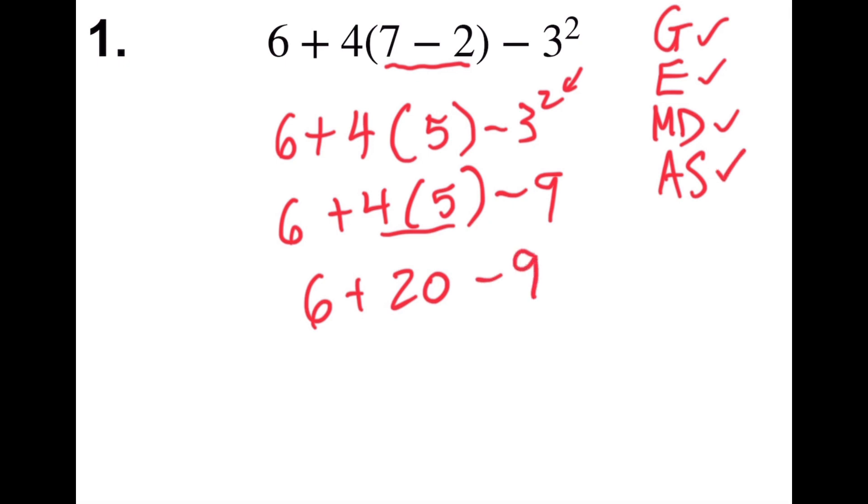And then last but not least, add and subtract from left to right as you see them. So 6 plus 20 is 26. 26 minus 9 is 17.